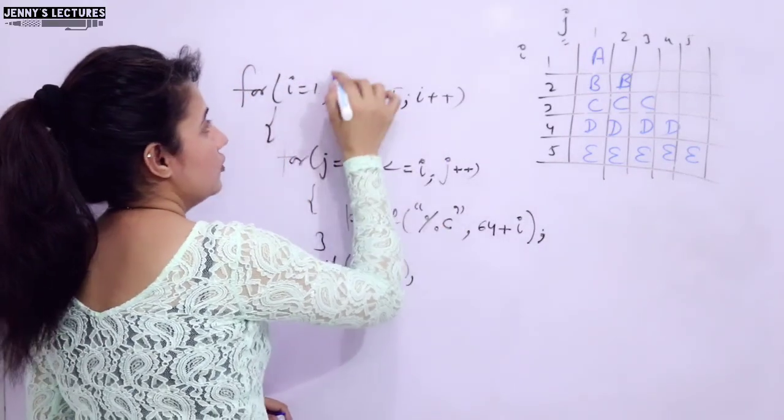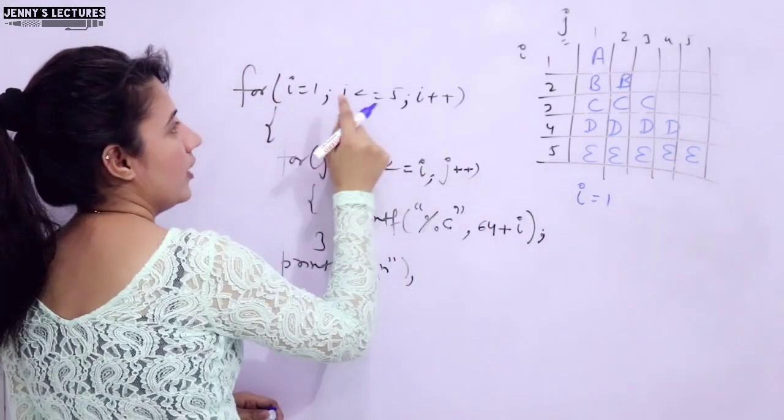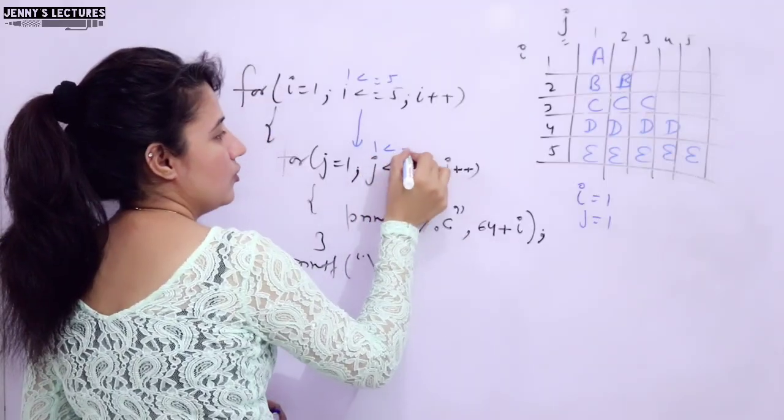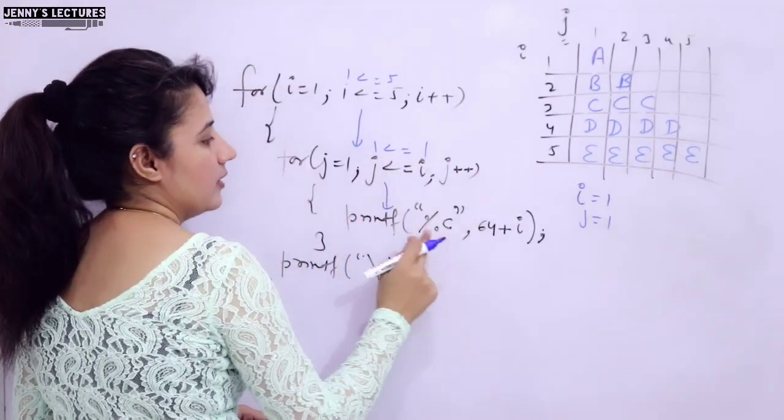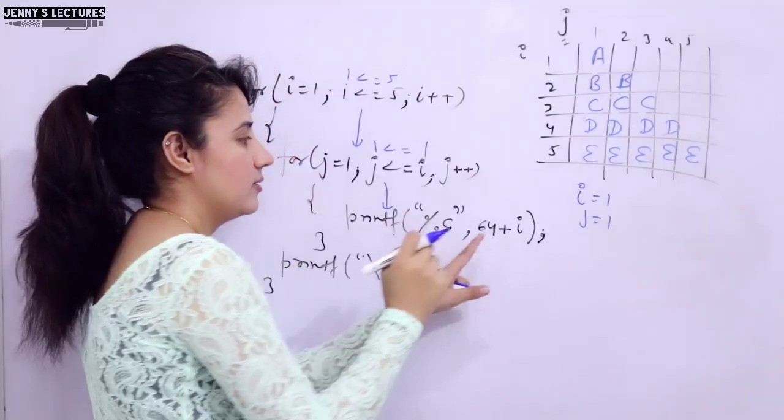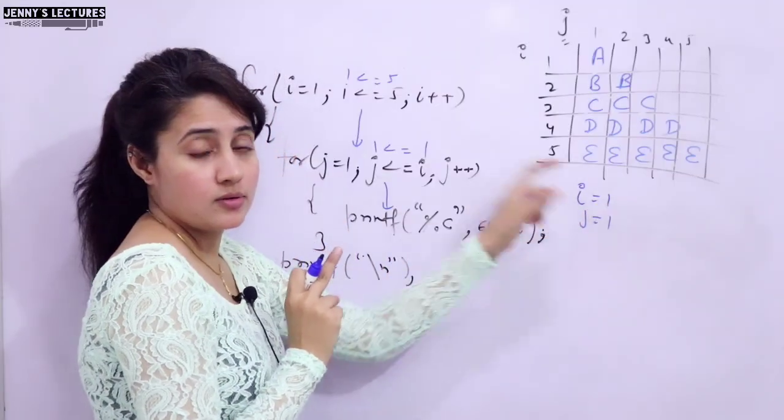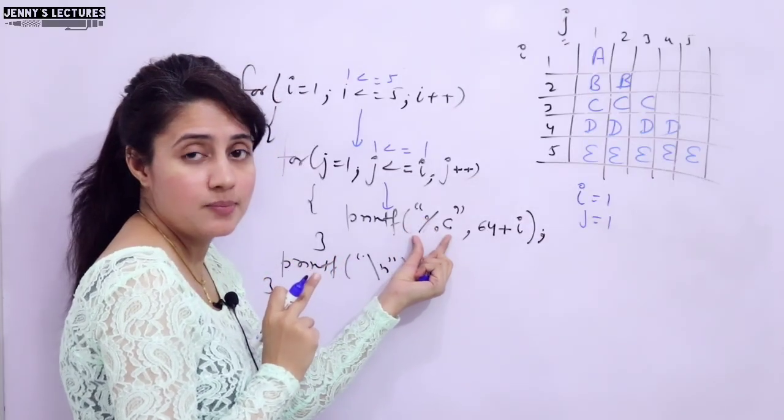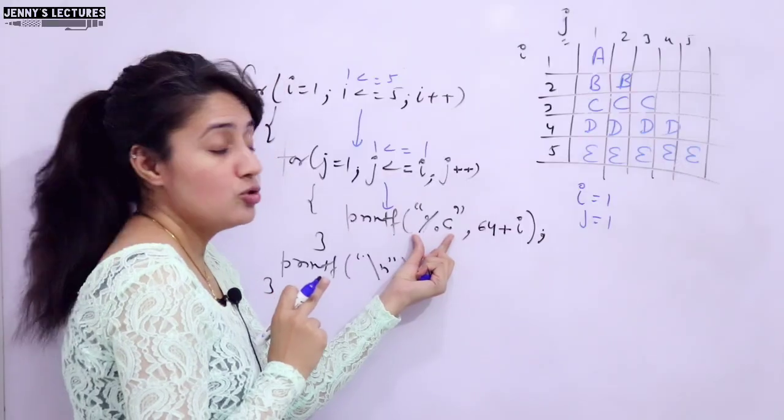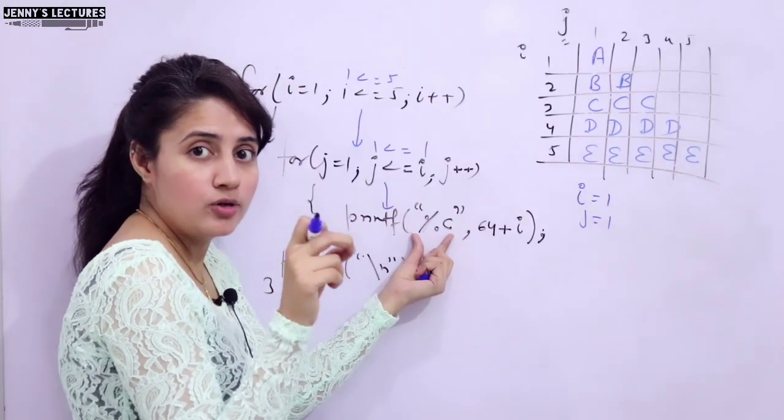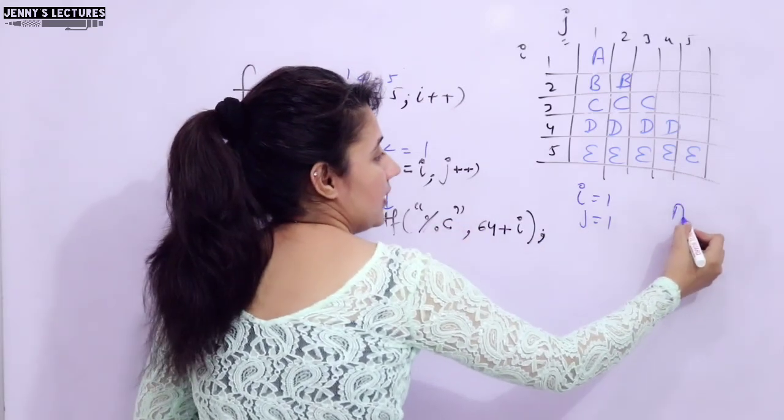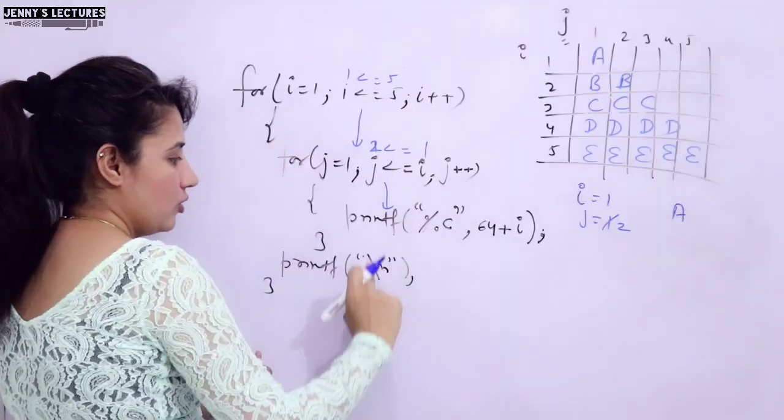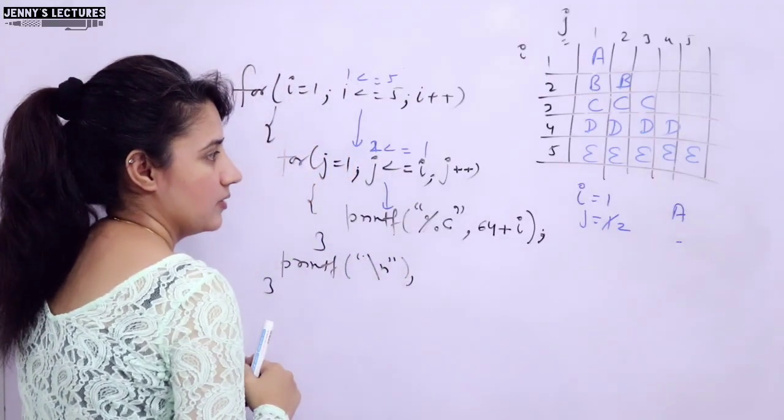Let me trace this program. First of all, i value becomes 1. 1 less than or equal to 5, yes, condition true, will enter here. J would be initialized with 1. 1 less than or equal to i value is 1, yes, condition true, will enter here. Print percentage C, 64 + i. 64 + i value is 1 = 65. We cannot print 65 because format specifier is percentage C. You have to print alphabet. Corresponding to 65, alphabet is capital A. So capital A would be printed. J++, J becomes 2. Is this condition true now? No. Exit from the loop, slash n means control will be in the next line.